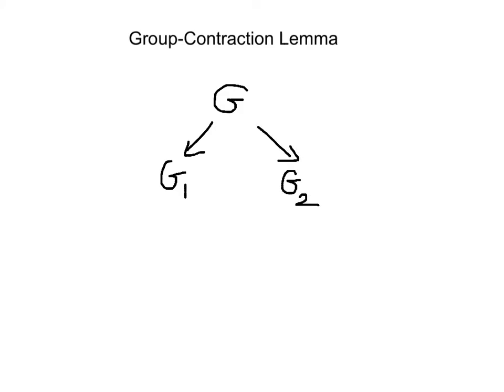The second lemma is the group contraction lemma, which is the idea that if a group is decisive over a particular pair, then so is a smaller group contained in it. The proof is as follows: consider a group G which is decisive, and partition it into two subgroups, G1 and G2. Let everyone in G1 prefer X over Y and X over Z — we are considering three alternatives: X, Y, and Z. The preference between Y and Z is undecided and could be anything.